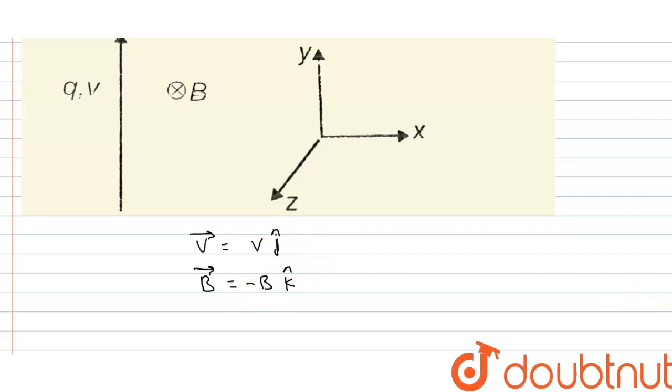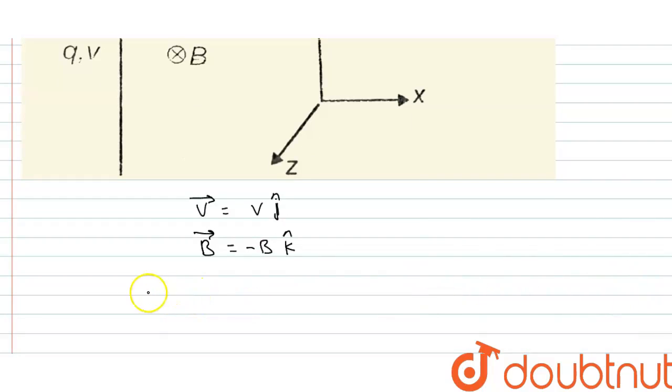So we have to find the direction of force. We know that force is equal to Q, vector V cross vector B. So Q vector V is V j cap cross minus B k cap.